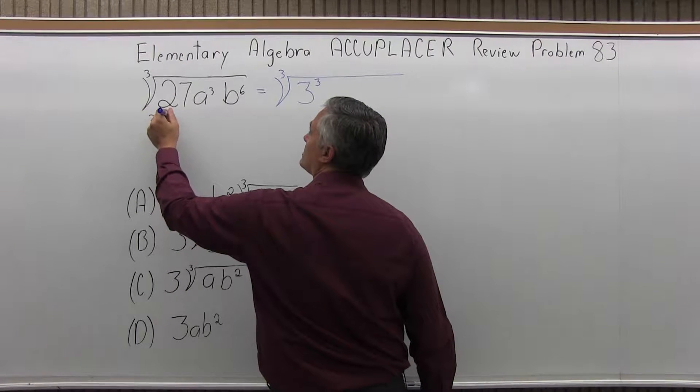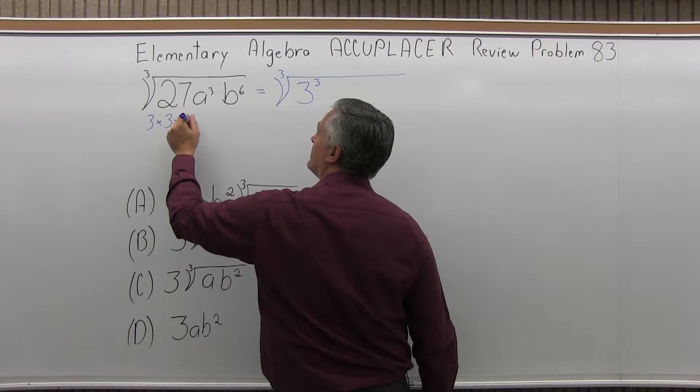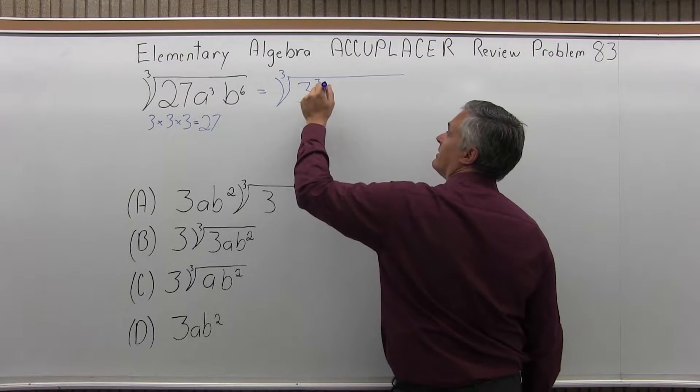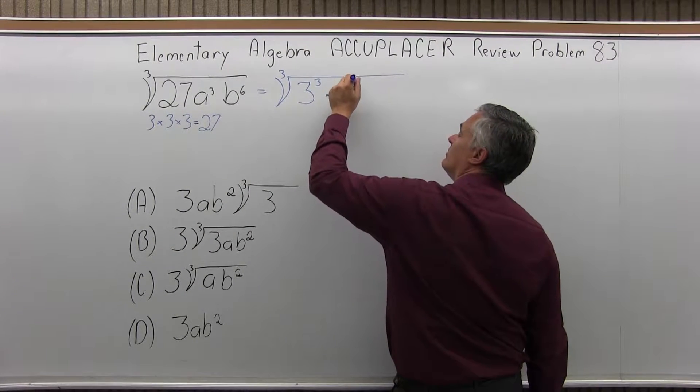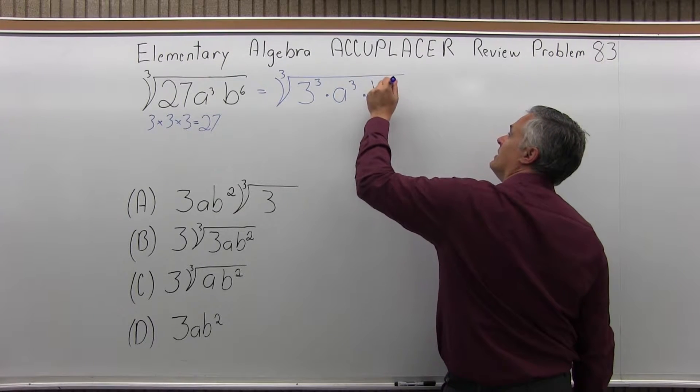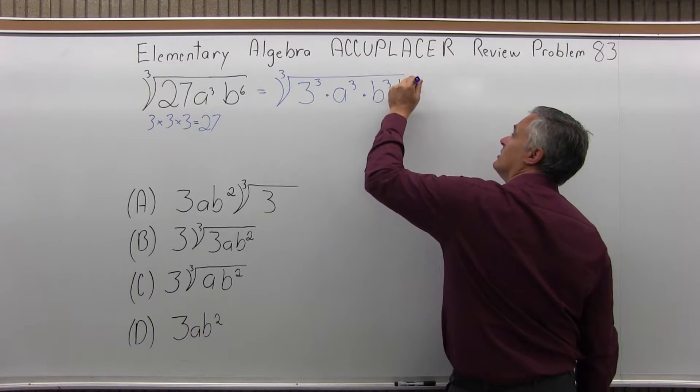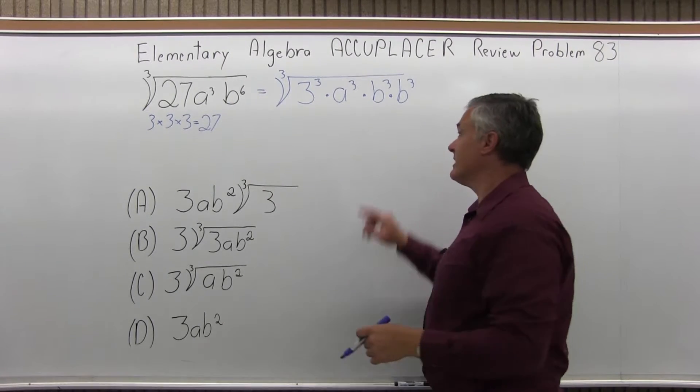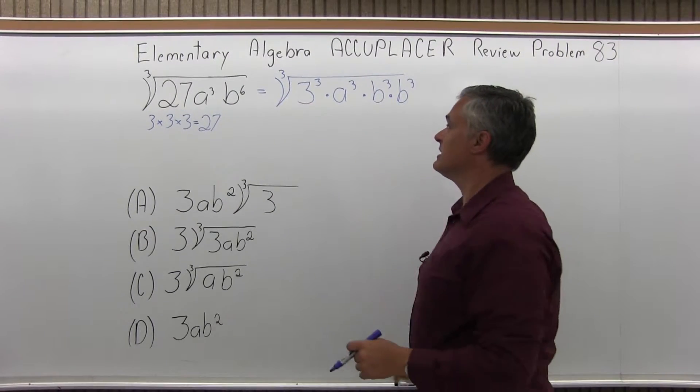3 times 3 times 3 is 27. And then I'm going to write times a³ and I'm going to change the b⁶ a little bit too. I'm going to say b³ times b³. b³ times b³ is still b⁶, right? You add the exponents together, 3 plus 3 would be 6.